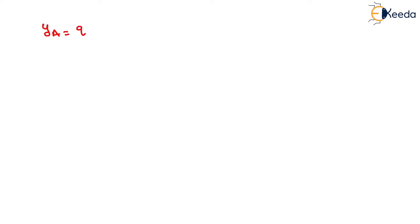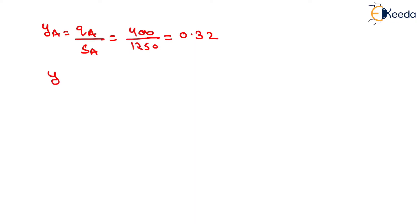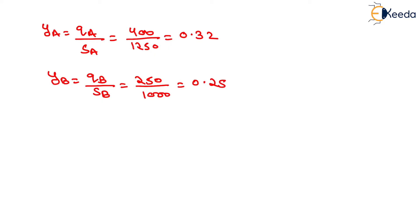We need to determine the value of YA, which equals QA divided by SA. Putting QA as 400 and SA as 1250, we get YA equal to 0.32. Similarly, YB equals QB divided by SB. Putting QB as 250 and SB as 1000, we get YB equal to 0.25.